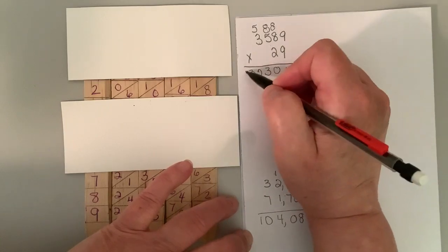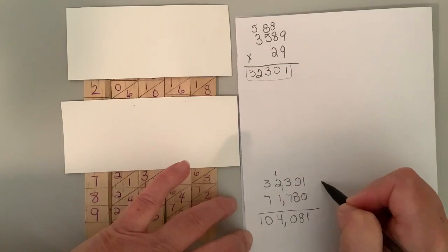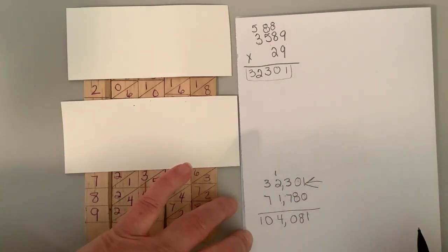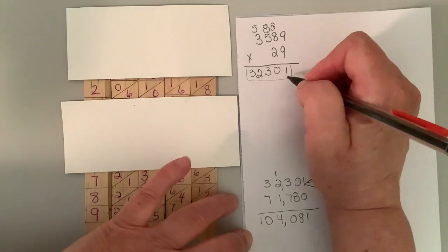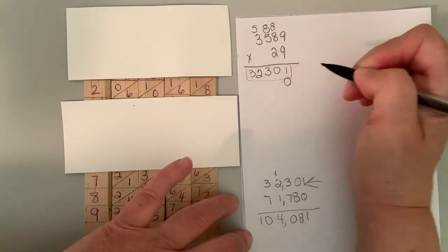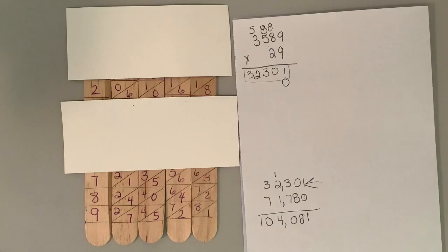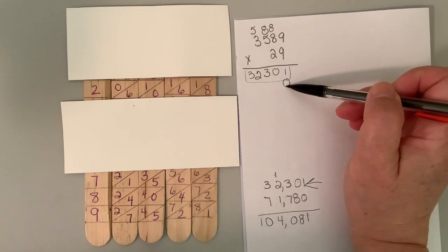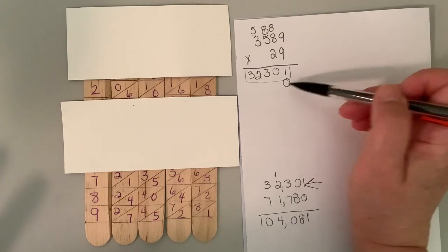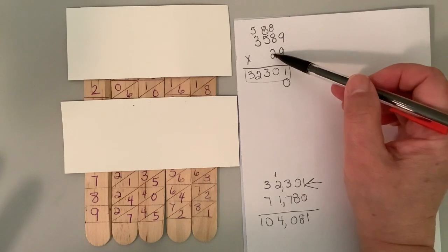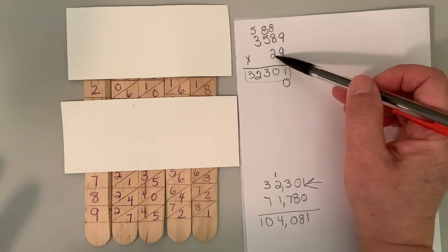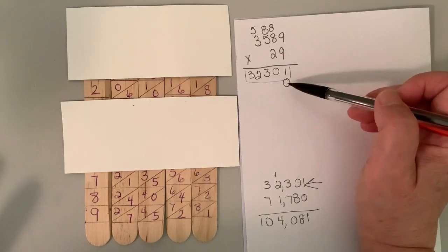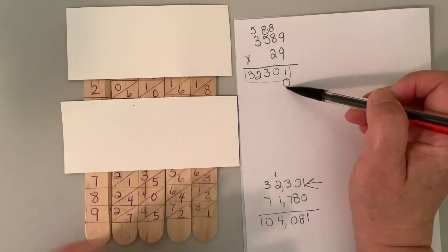Nine times three is 27, plus five is 32. Look what I have here. It matches. So then we put a zero down here. I have issues with putting the zero. I've had teachers tell me they call it laying a golden egg, zero placeholder. It is essentially a placeholder because we're multiplying by 20 and we know that anything times 20 is going to end in a zero. So that's why the zero is going there.